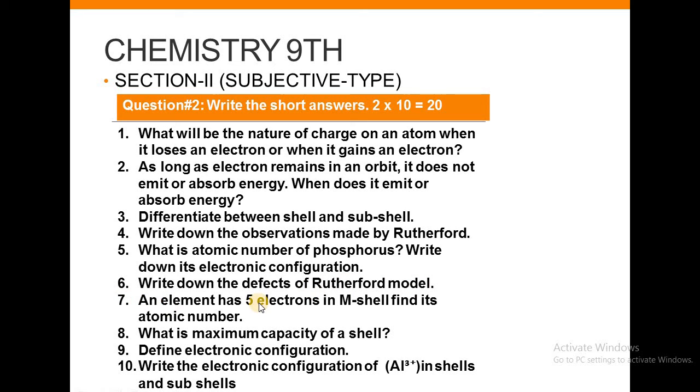Number 6: Write down the defects of Rutherford model. Number 7: An element has 5 electrons in M shell, find its atomic number. Number 8: What is the maximum capacity of a shell? Number 9: Define electronic configuration. Number 10: Write the electronic configuration of aluminum in shells and sub-shells.